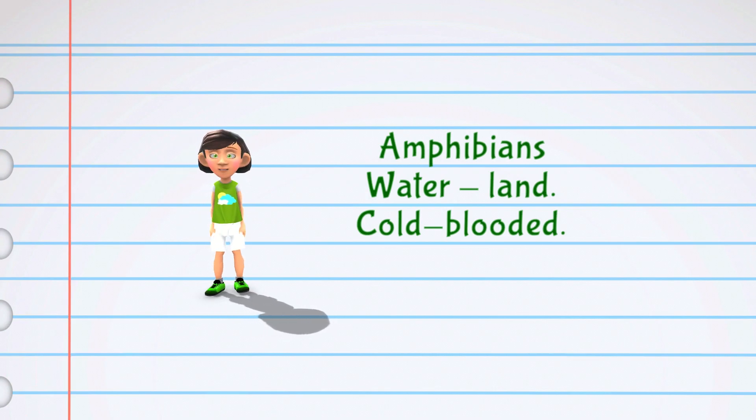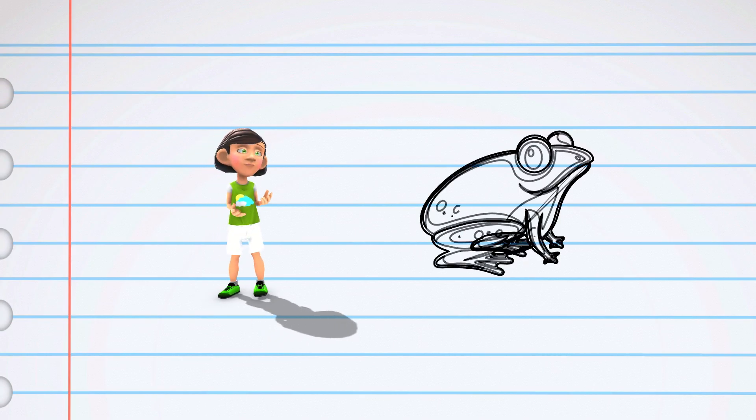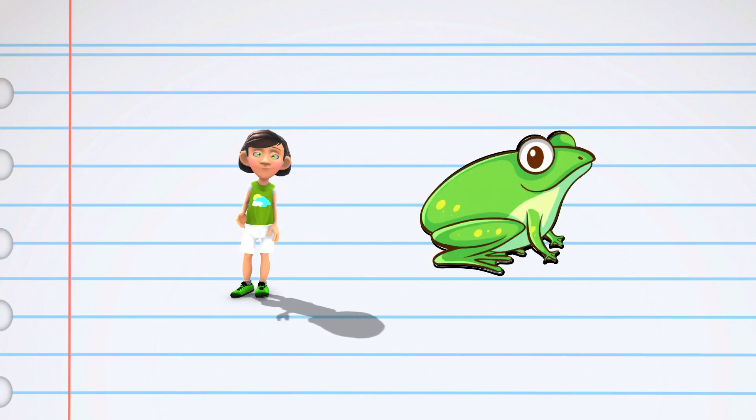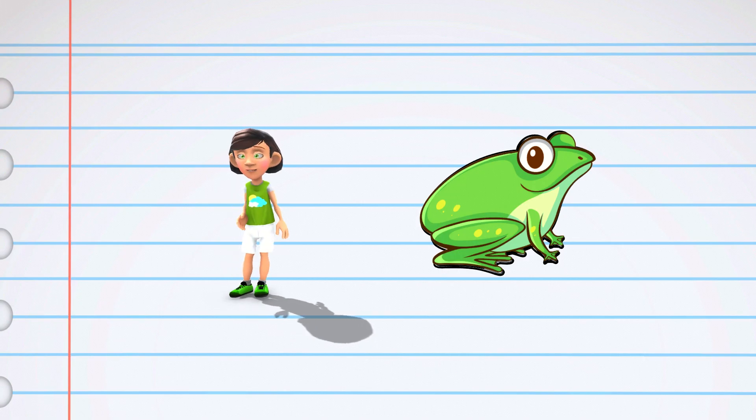Here are some examples of amphibians: frogs and toads. Frogs are special animals that can live both in water and on land. They have moist and slimy skin, big eyes, and are great jumpers. Frogs catch insects with their sticky tongues and make croaking sounds.